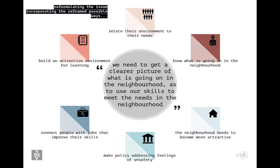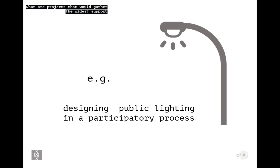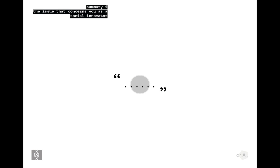Participants in the lighting design process improved their skills — learning how to get something into public space, how electricity works, how to design a lamp, and because the lamps had to be sustainable, they also learned about solar power. For the schools, a participatory learning environment was created that attracted children who eventually started their own projects. Because it involved lighting, the Gletcher even managed to get an energy company on board as an additional stakeholder.